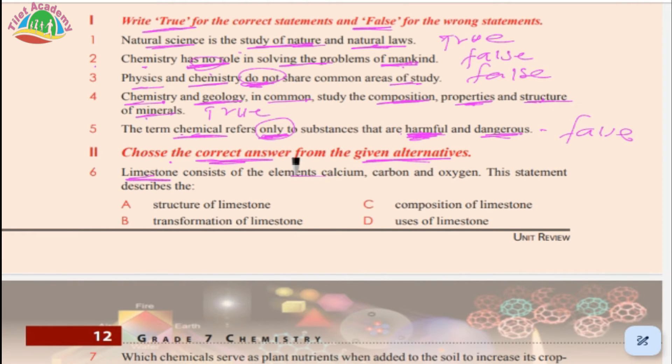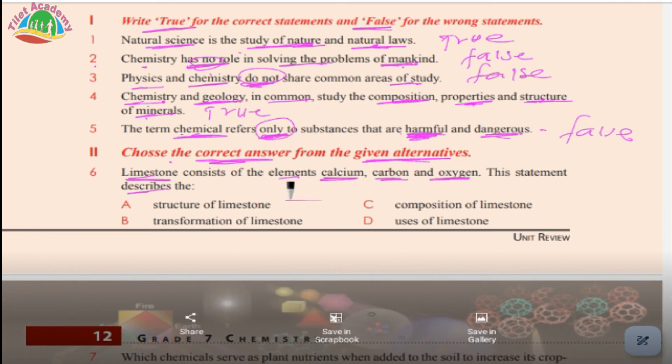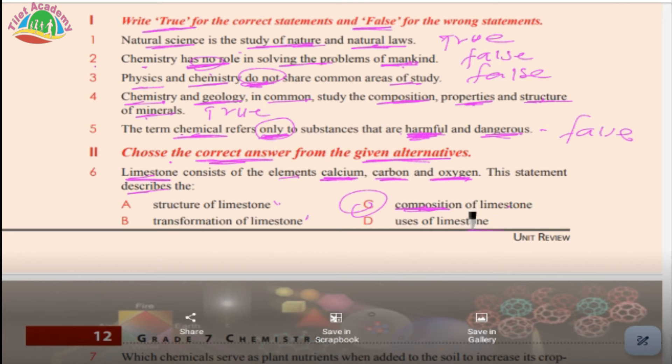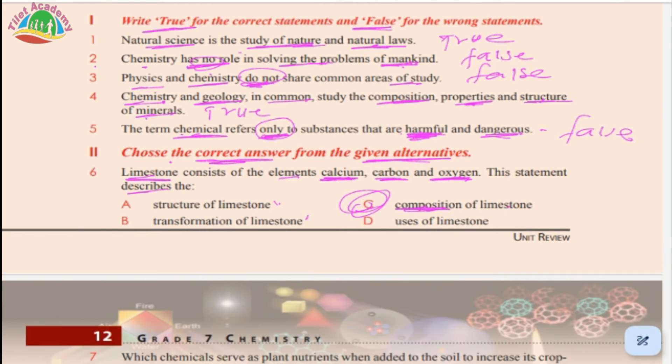Question: Limestone consists of the elements calcium, carbon, and oxygen. This statement describes: A. structure of limestone, B. transformation of limestone, C. composition, D. uses of limestone. This is composition - it describes what elements make up limestone. So the answer is C.